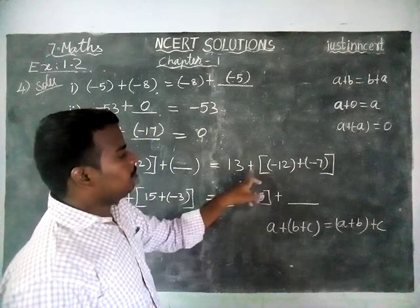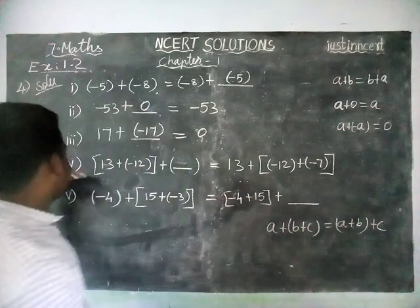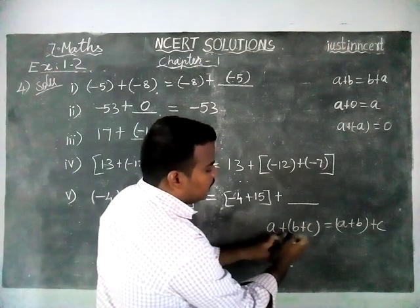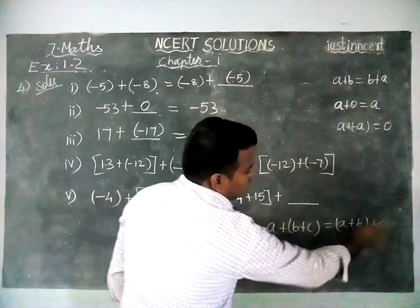And this is A plus within bracket B plus C. And these two, fourth sum and fifth sum in the same model. A plus within bracket B plus C is equal to within bracket A plus B plus C.